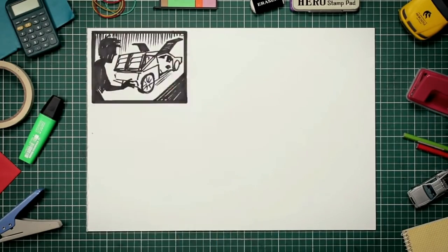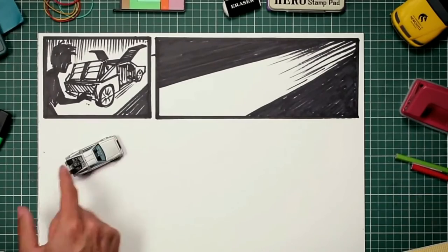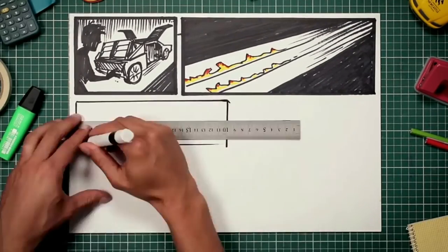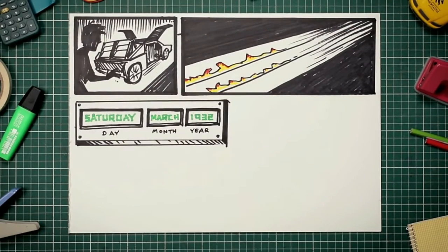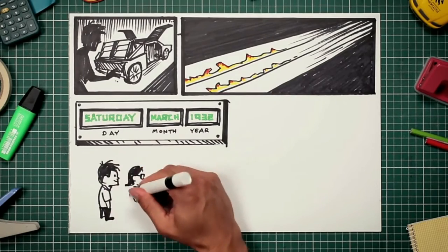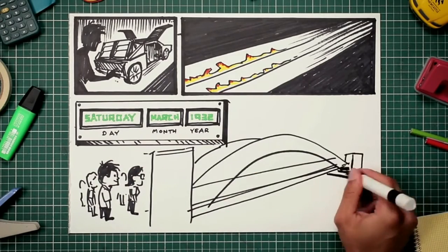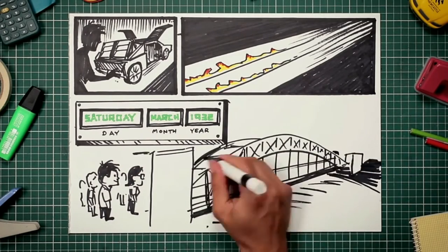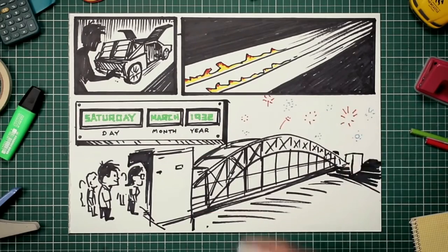Now let's jump into our time machine and go back to Saturday, March 1932. The Sydney Harbour Bridge is about to open. The bridge is a marvel of civil engineering and a pretty cool place to set off some fireworks.